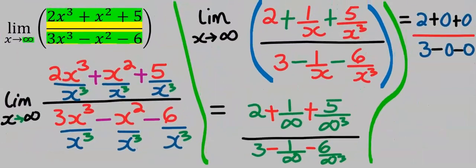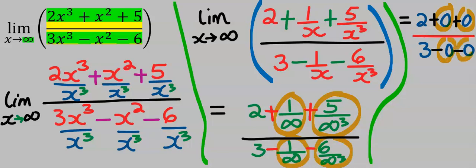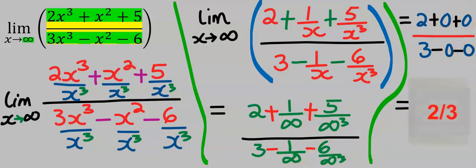Any number divided by infinity is zero: 1 ÷ ∞ = 0 and 6 ÷ ∞ = 0. Hence our final answer is 2/3.